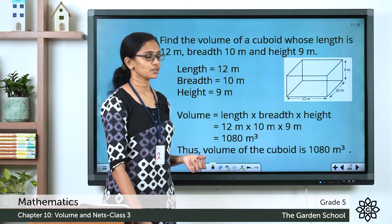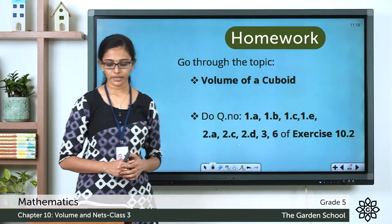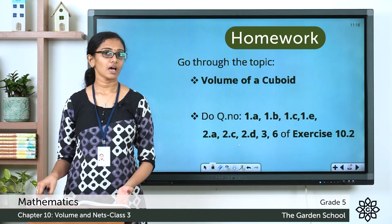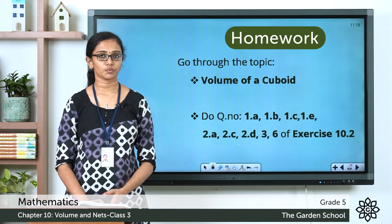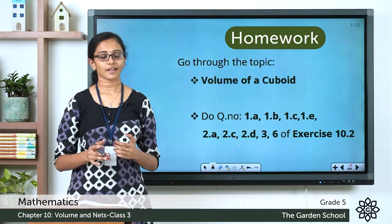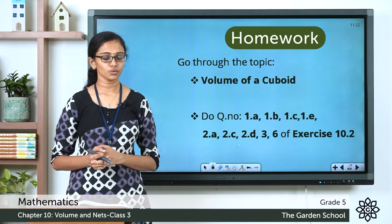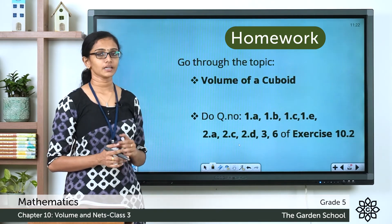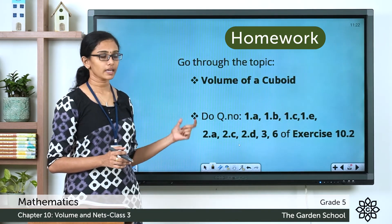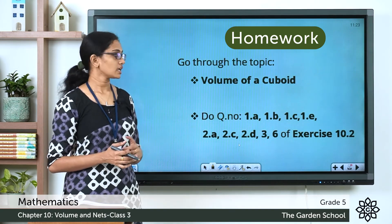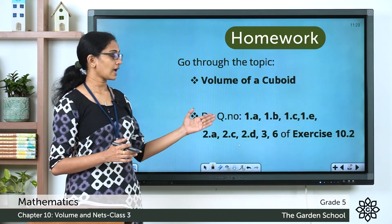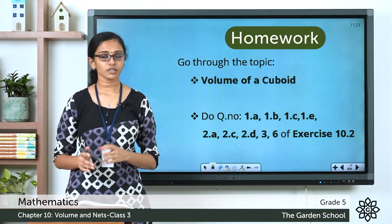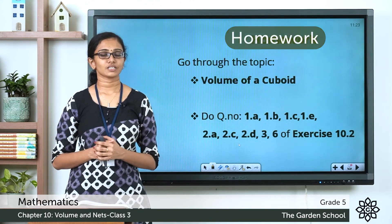I hope these examples are clear to you. You can go through this topic — volume of a cuboid — on pages 155 and 156 of your textbook. Go through the topic once, then move on to exercise 10.2. You have to work out questions 1A, 1B, 1C, 1E, 2A, 2C, 2D, and also questions 3 and 6 of exercise 10.2. Do this in your notebook, take a picture, and send it to us through Teams.